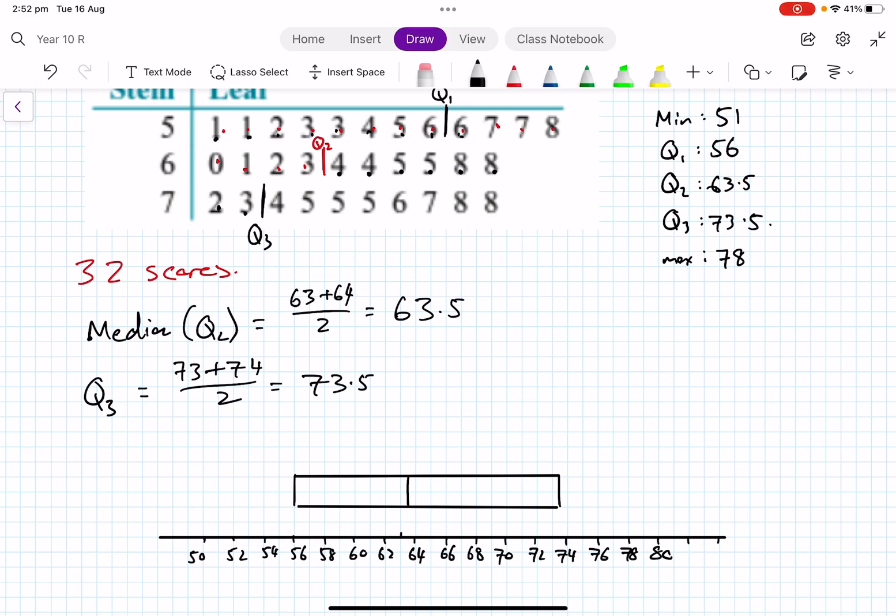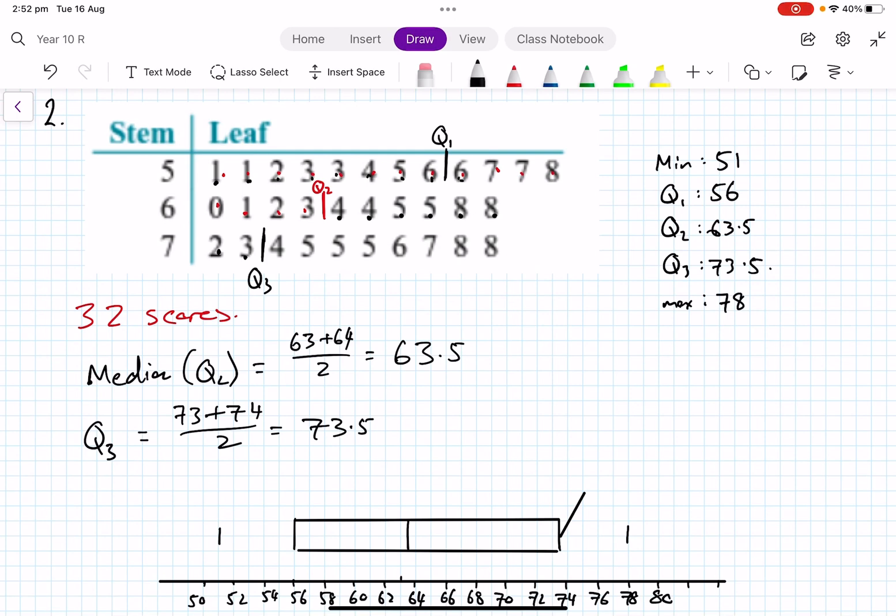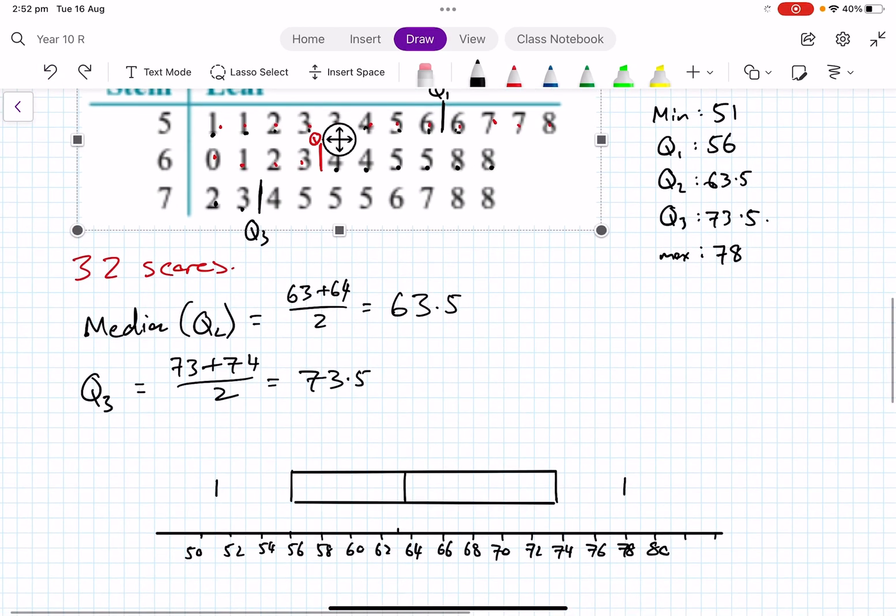Now once we've got our box, we can do our whiskers. It used to be called a box and whisker plot, actually. 78 is my max, 51 is down here, that's my min. Little markers there, and then we connect it up nice and straight with a line.